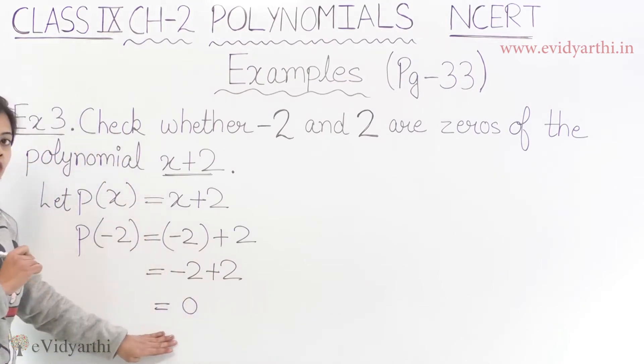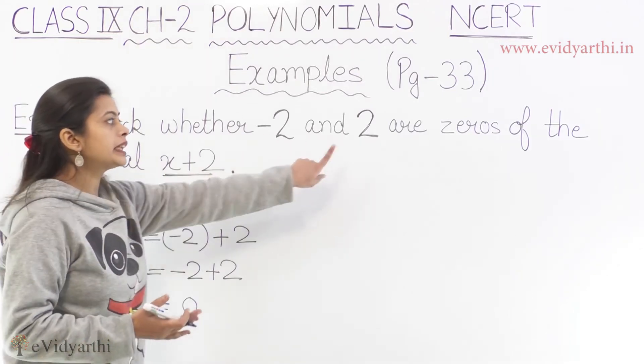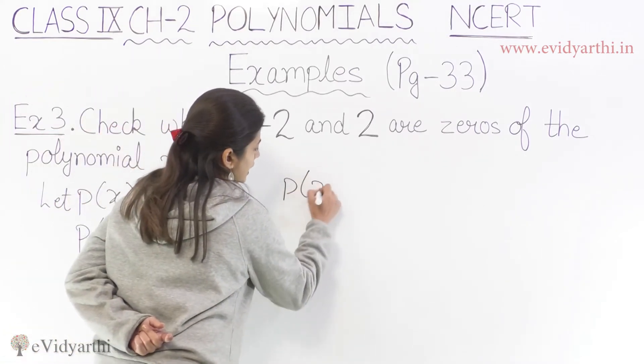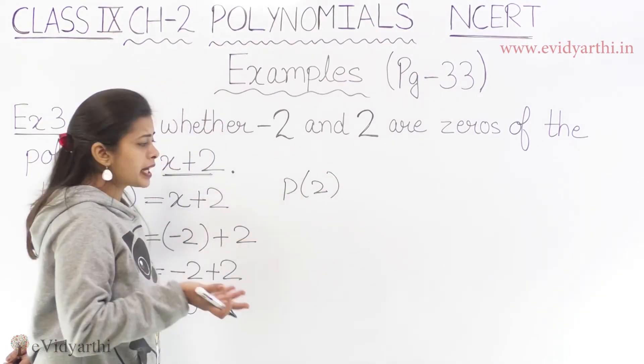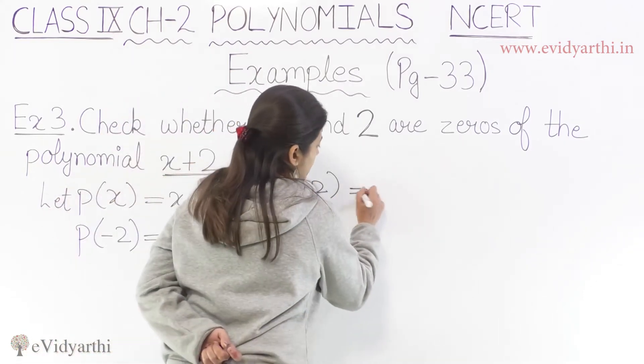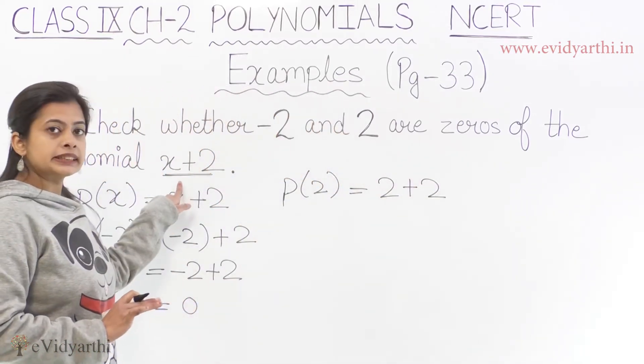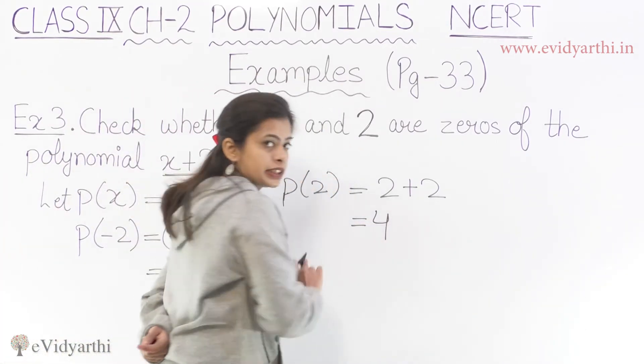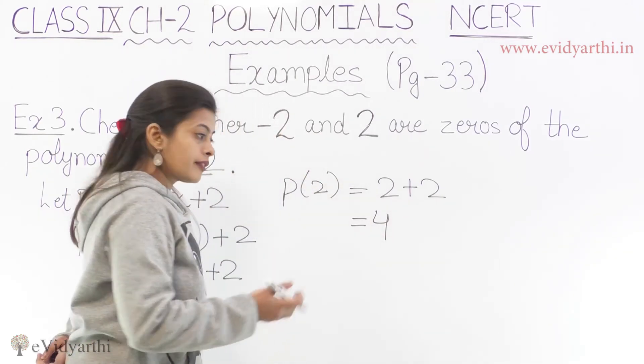So this is confirmed that our minus 2 is a zero. Now we will check if 2 is a zero. So let's check it. Now we will have P of 2. Let x equals to 2. In the second case, in place of x we substitute 2. We have 2 plus 2. Our polynomial P of x is x plus 2. So we did 2 plus 2, we get 4. Now the answer we got is not 0.